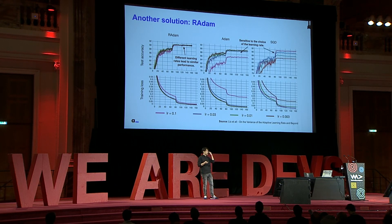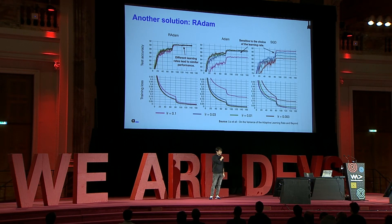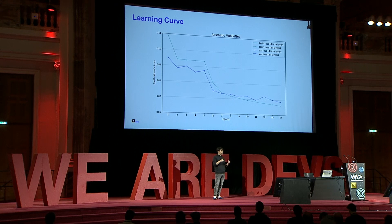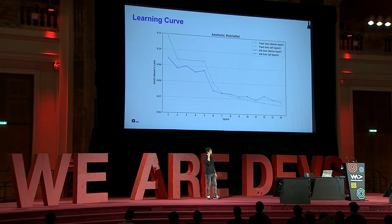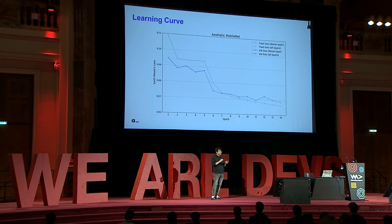There are other solutions to handle learning rate sensitivity, such as RAdam — Rectified Adam — which is less sensitive to the learning rate. I recommend reading that paper. Our learning curve shows we only train the dense layers first at high rate, then lower the rate across all layers. We preserve knowledge from ImageNet training, such as how humans look, facial features, and so on.